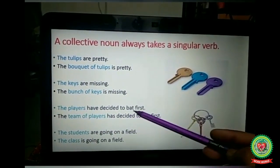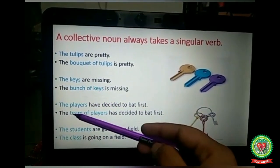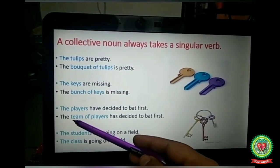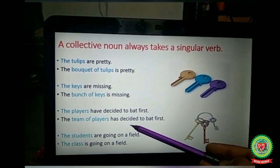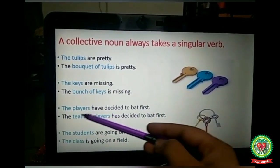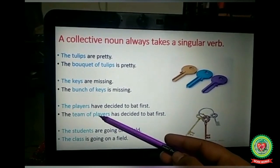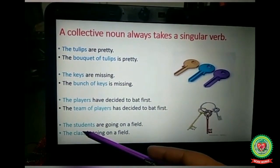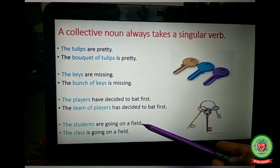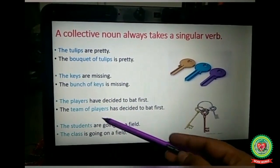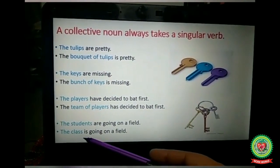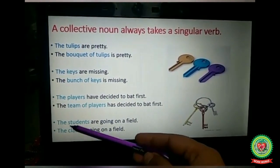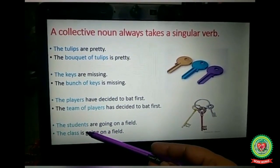'The players have decided to bat first' — we are talking about more players, so we take the plural verb 'have.' But 'The team of players has decided to bat first' — team of players is a collective noun, so we take the singular verb 'has.' Next: 'The students are going on a field trip' — more students, so we take the plural verb 'are.' But 'The class is going on a trip' — class is a collective noun, so we take the singular verb 'is.'